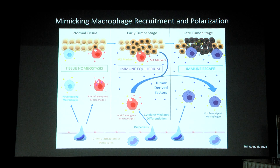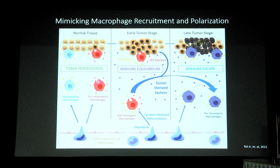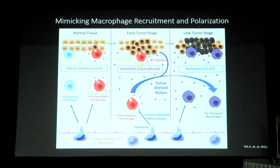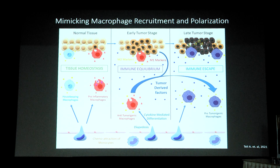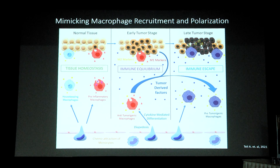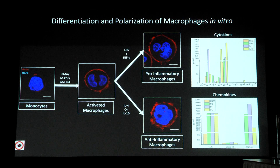During normal immunosurveillance, monocytes come from the circulation, travel through the extracellular matrix, and reach tumor or tissue sites where, depending on local signals, they differentiate and can perform either housekeeping or pro-inflammatory functions. As tissues turn into early-stage tumors — which we are recapitulating using spheroids — monocytes get trained or brainwashed by tumor-derived factors and start behaving differently. As the tumor progresses to later stages, they are further brainwashed to perform pro-tumorigenic functions, and that is when we call them TAMs.